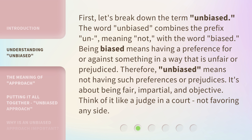First, let's break down the term Unbiased. The word Unbiased combines the prefix Un, meaning Not, with the word Biased. Being biased means having a preference for or against something in a way that is unfair or prejudiced. Therefore, Unbiased means not having such preferences or prejudices. It's about being fair, impartial, and objective. Think of it like a judge in a court, not favoring any side.